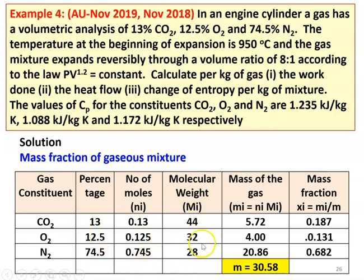Molecular weights: 44, 32, and 28. Mass equals column 3 multiplied by column 4: 0.13 into 44 equals 5.72; 0.125 into 32 equals 4.0; 0.745 into 28 equals 20.86. Adding vertically, the total mass of the gaseous mixture is 30.58 kilogram. Mass fractions: 5.72 divided by 30.58 equals 0.187; 4.0 divided by 30.58 equals 0.131; 20.86 divided by 30.58 equals 0.682.